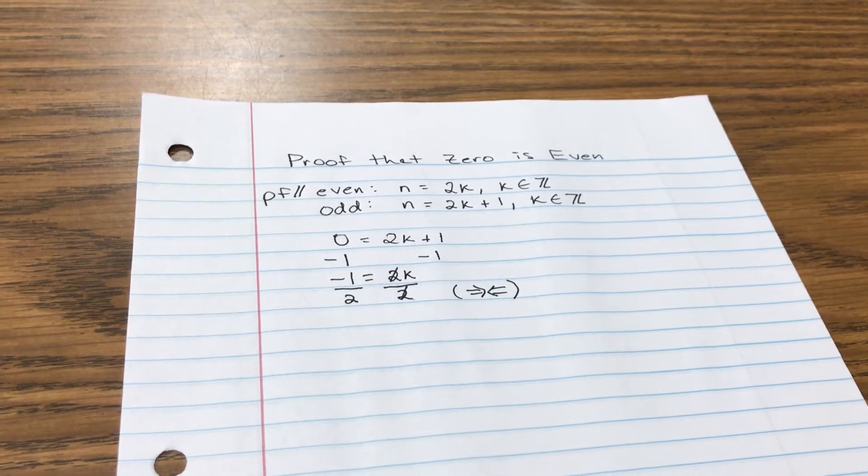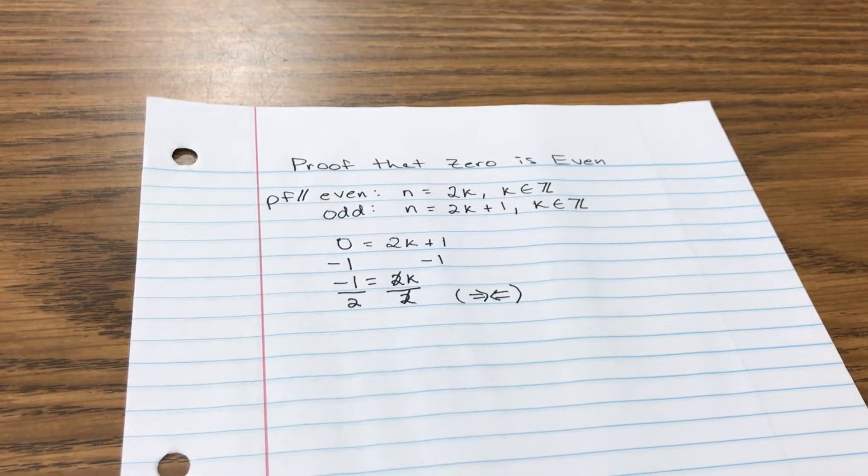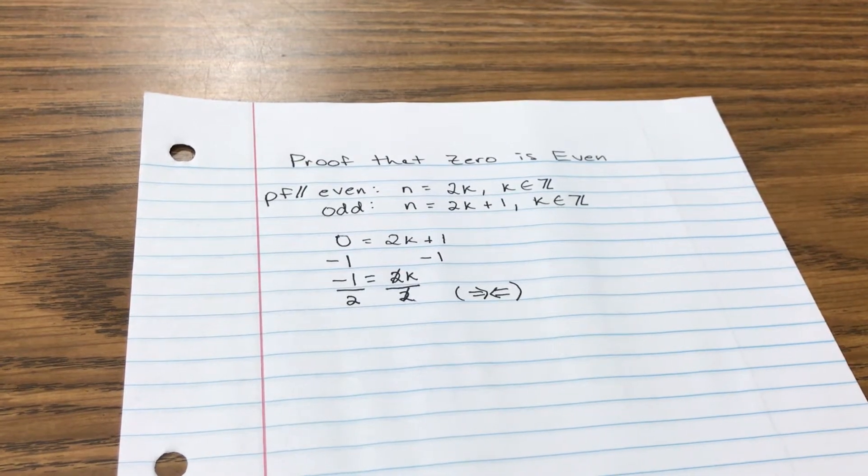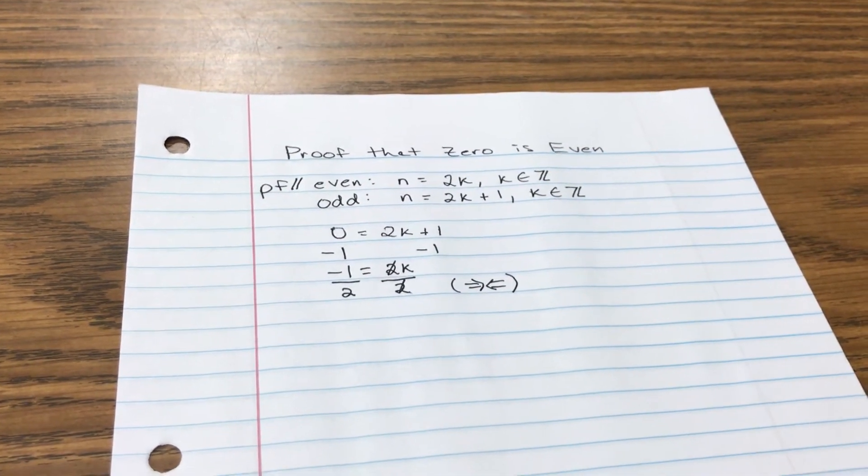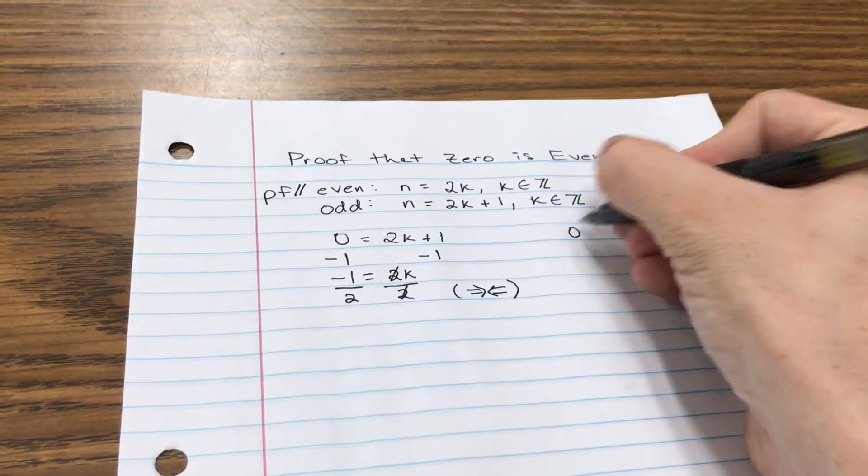So let me go ahead and show you how that would work. I said before that if a number was even it can be written as 2 times k. So let's go ahead and try that for 0. I'm gonna do it on the right side this time. So 0 is equal to 2 times k.